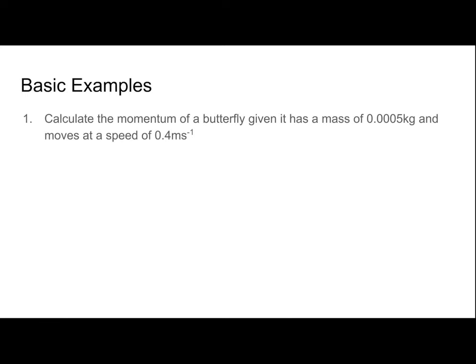Alright, some basic examples. Calculate the momentum of a butterfly given it has a mass of 0.0005 kilograms and moves at a speed of 0.4 meters per second. We're going to use p = mv, substituting m = 0.0005 and speed = 0.4, and multiply them together.